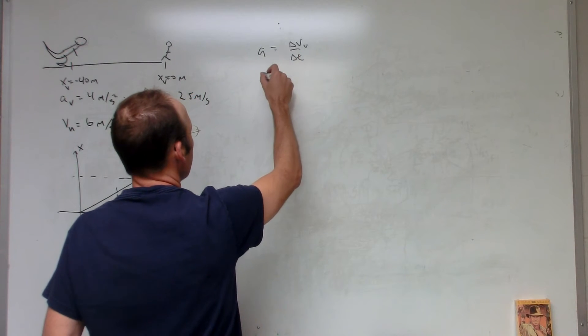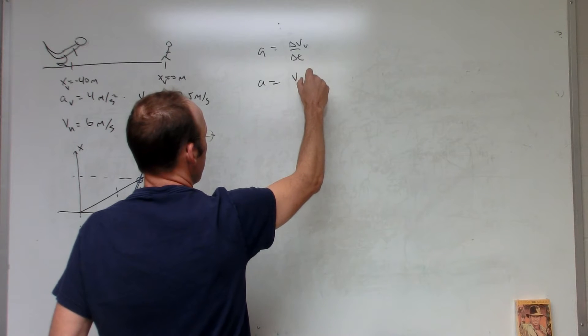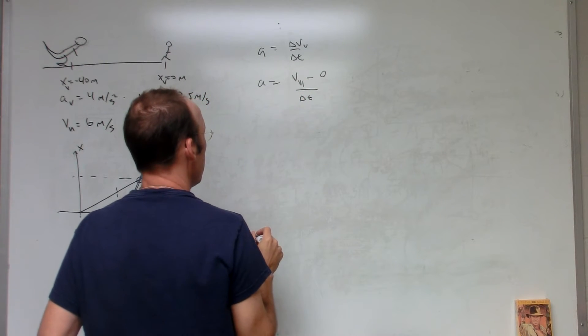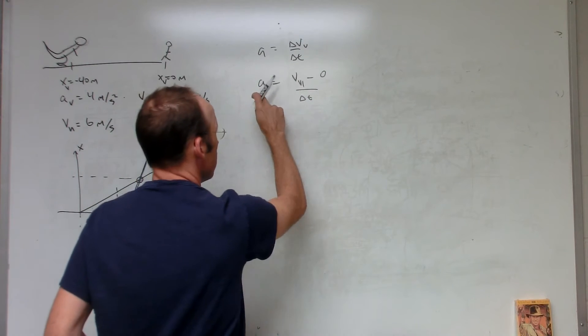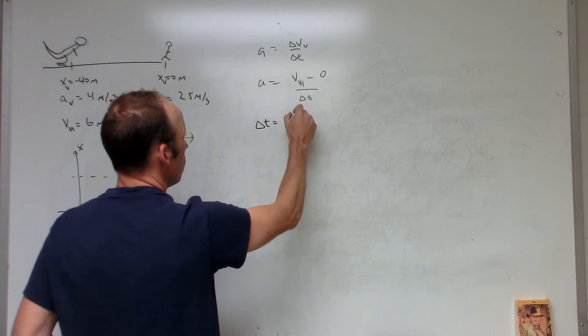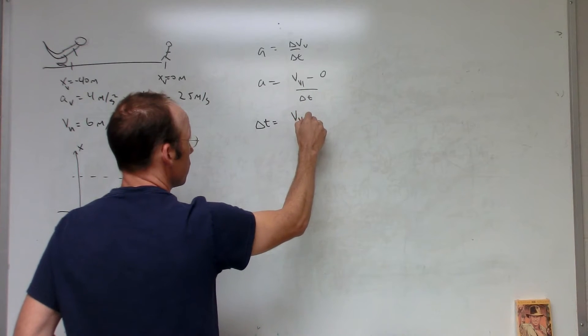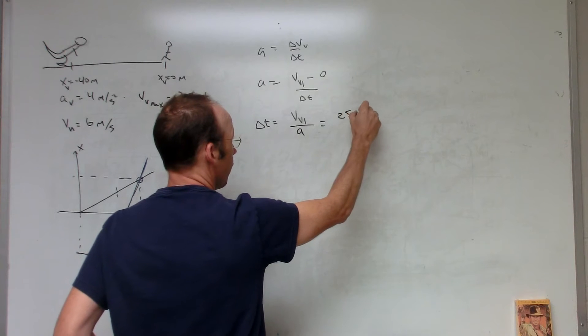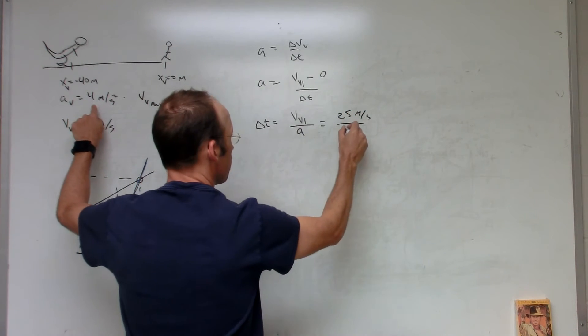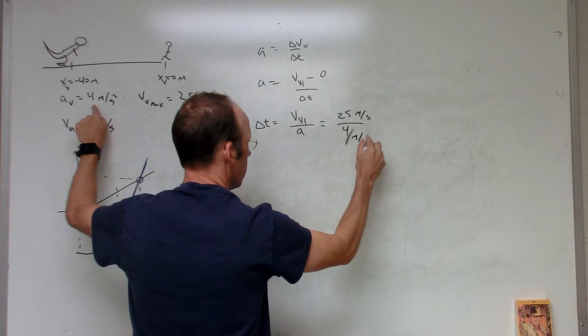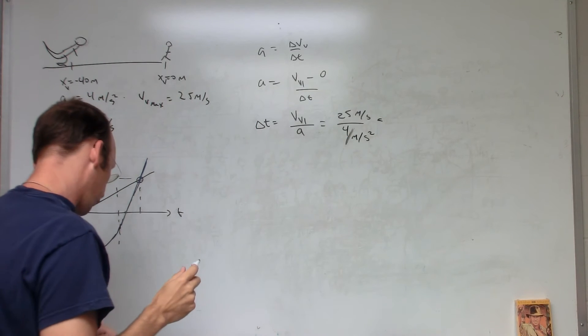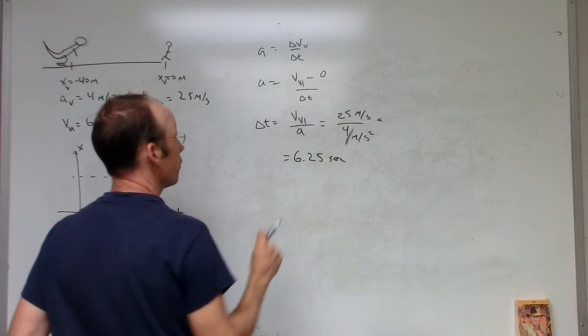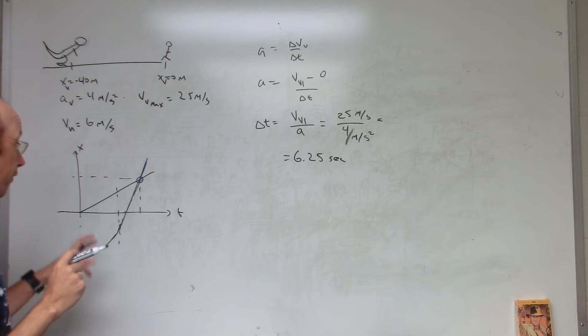For the Velociraptor, I have A is change in velocity over the change in time. This is going to be equal to V Velociraptor at time one, whichever that is, minus the initial velocity over delta t. So I know this final velocity and I know the acceleration so I can solve for this change in time. It's going to be equal to the maximum velocity divided by A. So it's 25 meters per second divided by 4 meters per second squared, and that gives me 6.25 seconds.